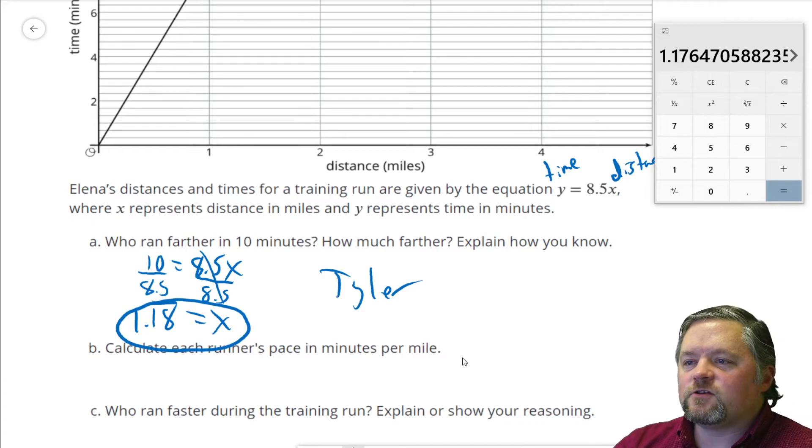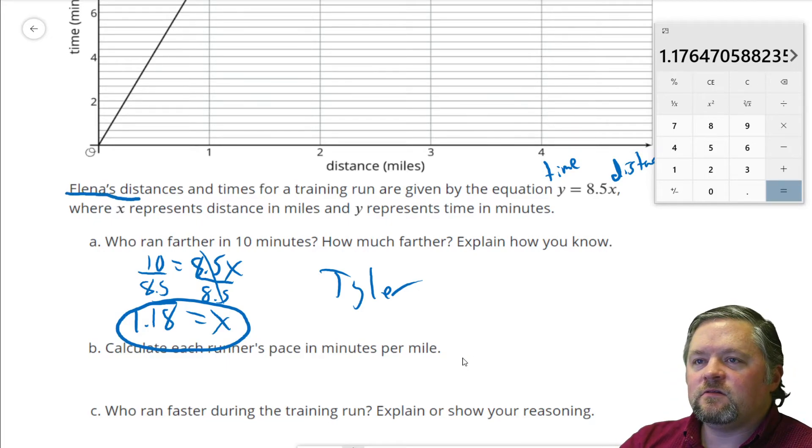Calculate each runner's pace in minutes per mile. Elena's given to us. If the equation is y equals 8.5x in minutes per mile, that's our unit rate. That's our slope.